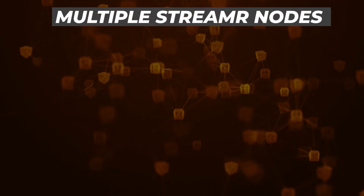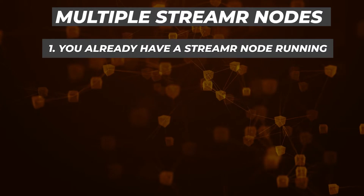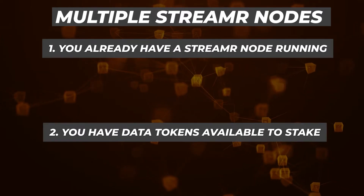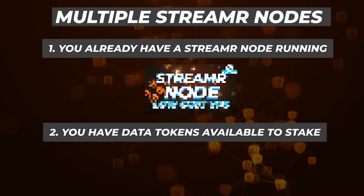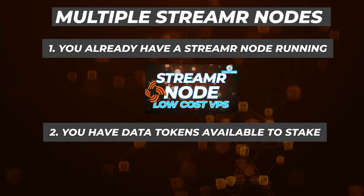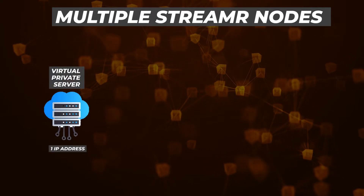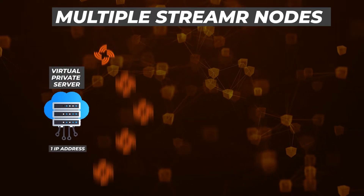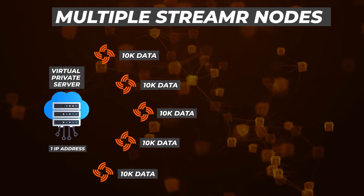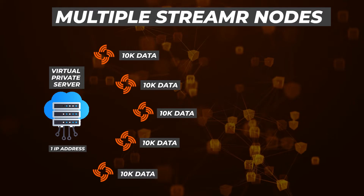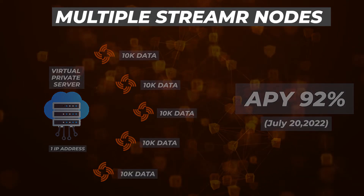I'm going to be making two assumptions. The first one is that you already have a streamer node up and running. And the second one is you have data tokens available to stake. If you don't have either of these, no problem — I have a guide to show you how to set up a streamer node and how to buy data tokens. With one VPS and a single IP on the streamer network, you can run up to five streamer nodes. To maximize profitability, you can stake up to 10,000 data tokens per node. The current APY is sitting at about 92%, so there's some real incentive to get these nodes up and running.